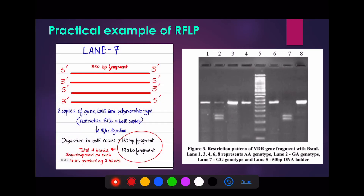In case of LEN7, we have two bands, which indicates that both copies of the gene have similar polymorphisms. Therefore, digestion occurs in both copies. A single digestion in both copies produces four bands — two bands at around 160 base pairs and two bands at around 190 base pairs — which superimpose on one another, resulting in two bands in LEN7.